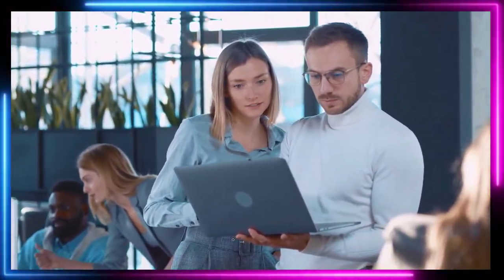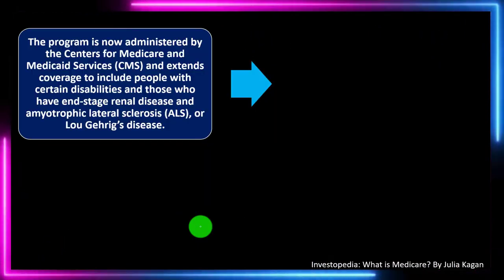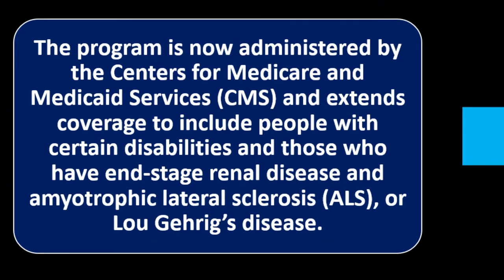These are debates in terms of how should things be set up — for our individual decisions within the system, for navigating it, and from a voting perspective, what would be the best setup? The program is now administered by the Centers for Medicare and Medicaid Services (CMS), and extends coverage to include people with certain disabilities, those who have end-stage renal disease, and amyotrophic lateral sclerosis (ALS), also known as Lou Gehrig's disease.